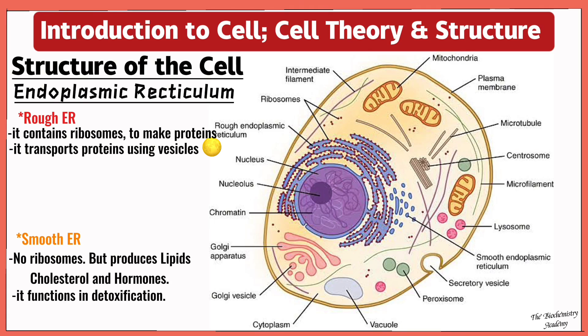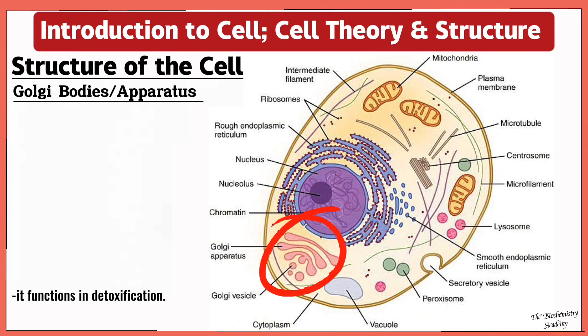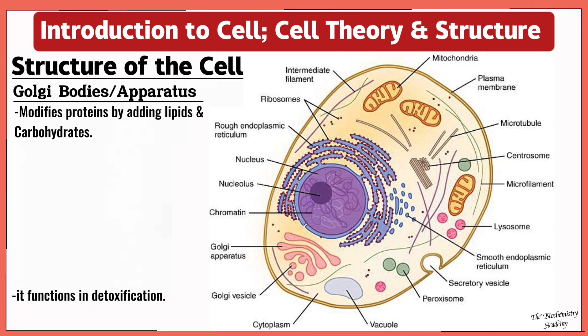Next we'll talk about the Golgi body. Remember we said that the rough endoplasmic reticulum transports protein in vesicles. Now these vesicles are transported to these Golgi bodies, and the Golgi bodies then modify the protein by adding lipids and carbohydrates to it. It also works in folding of the protein and then exports the protein out of the cell to carry out a specific function.